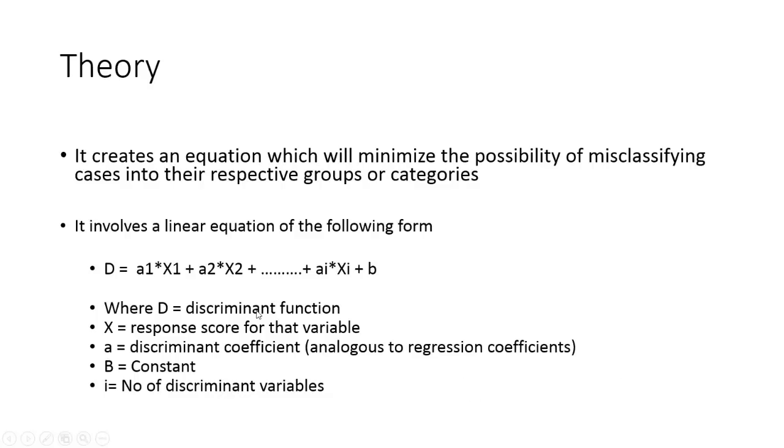Mathematically, it involves a linear equation. You can see on the screen there is a discriminant function D which is a linear combination of your variables, variable response scores. There is a set of weights a1 to ai. You have i number of discriminant variables, so there are i plus 1 number of estimates.